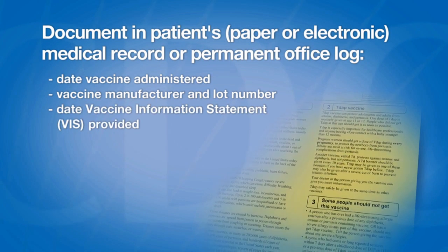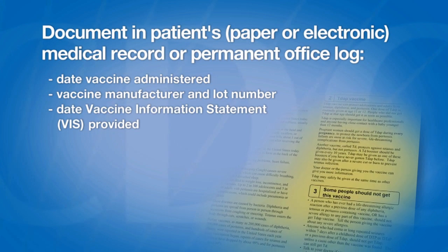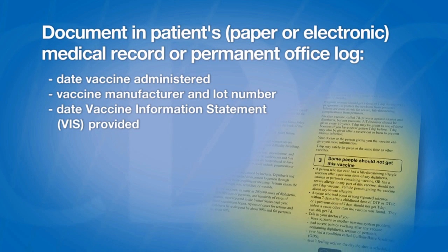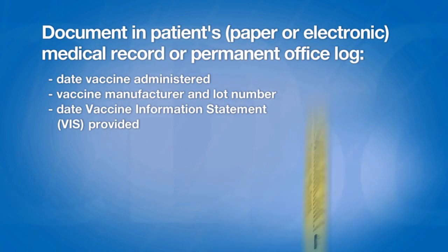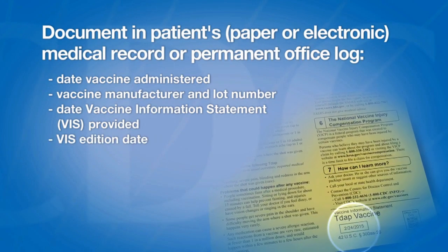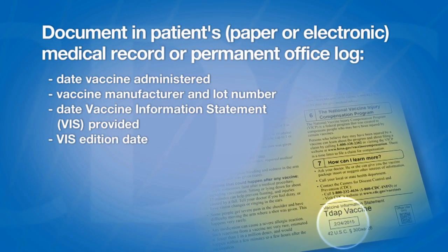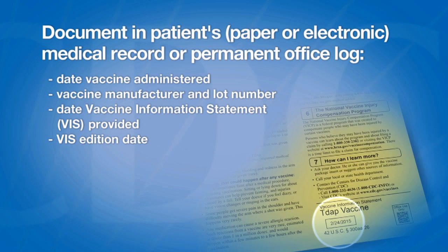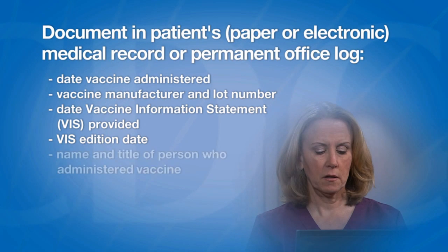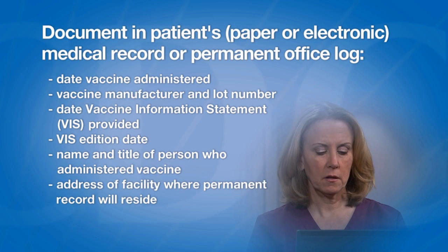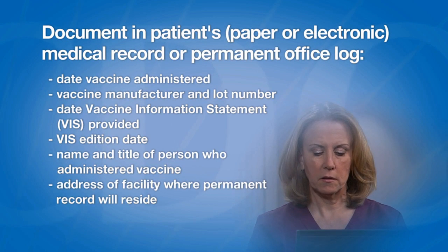The date the vaccine information statement or VIS was provided to the parent, patient, or guardian. The VIS edition date, located in the lower right corner on the back of the VIS. The name and title of the person who administered the vaccine, and the address of the facility where the permanent record will reside.